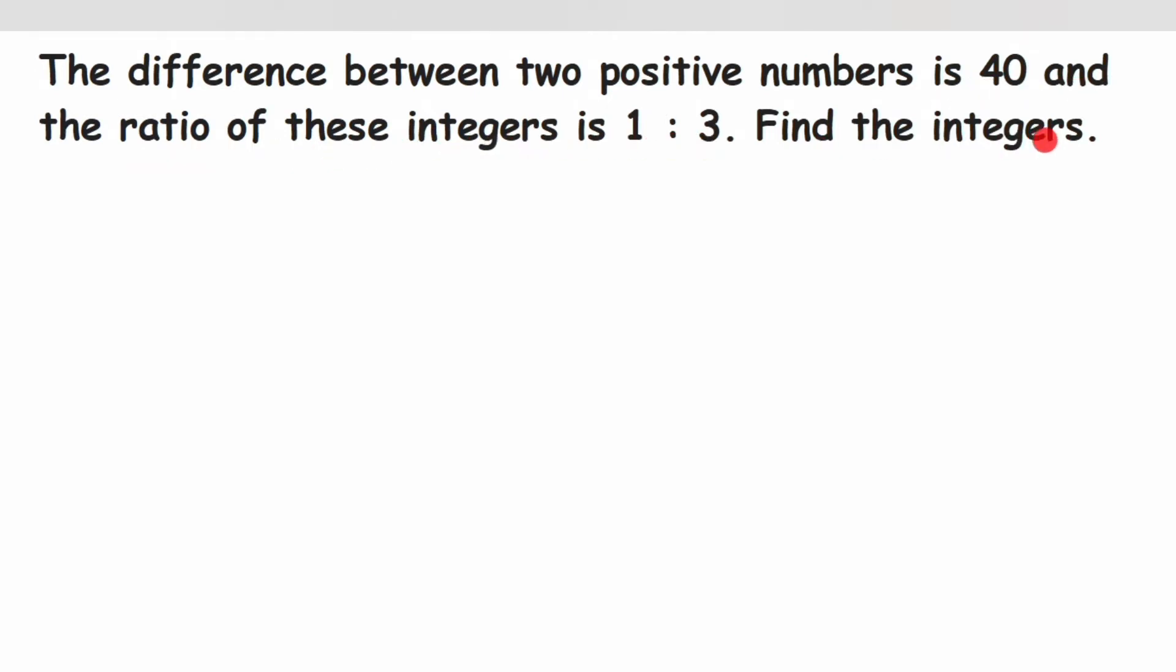First we're going to find out what these numbers are. We're going to assume that one number is x. Then they said that the difference between two positive numbers is 40.